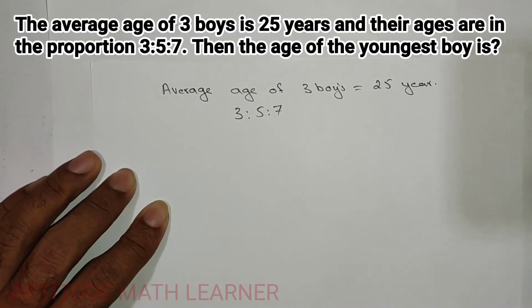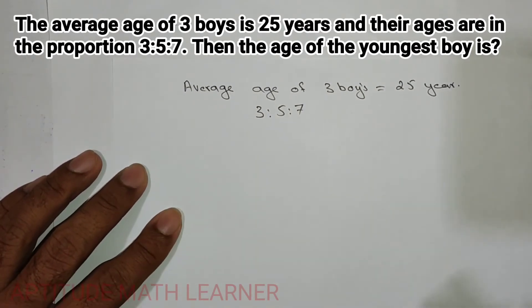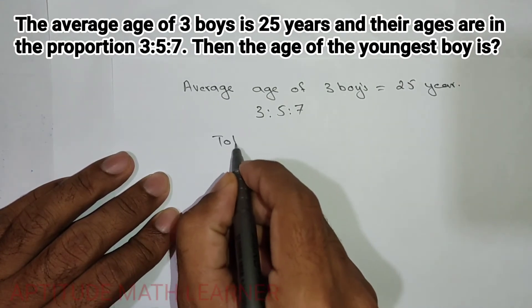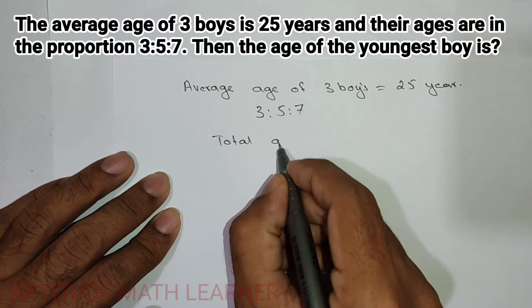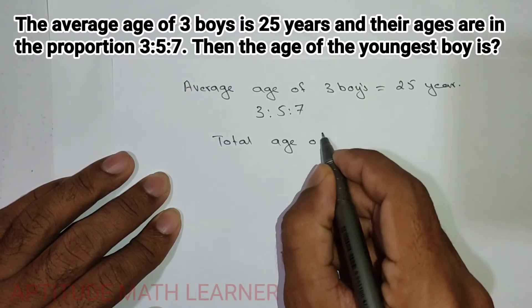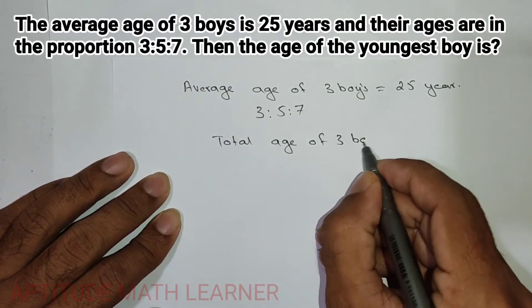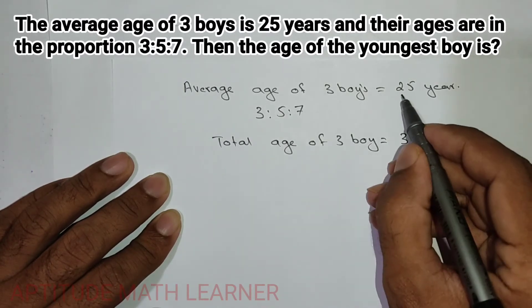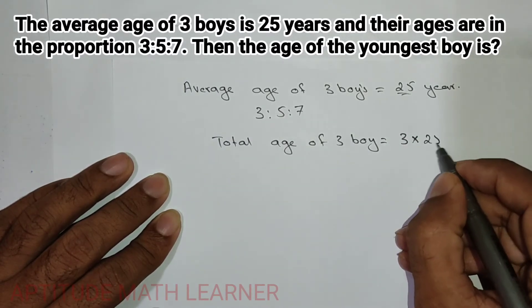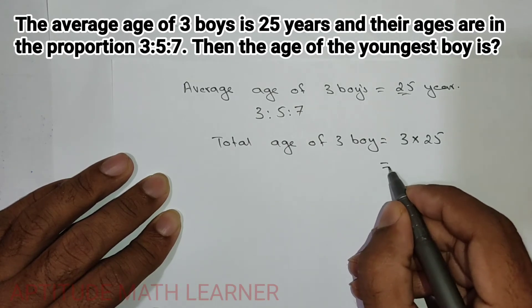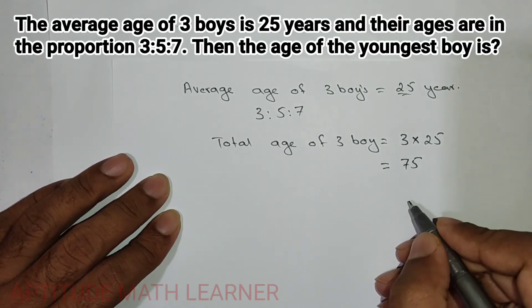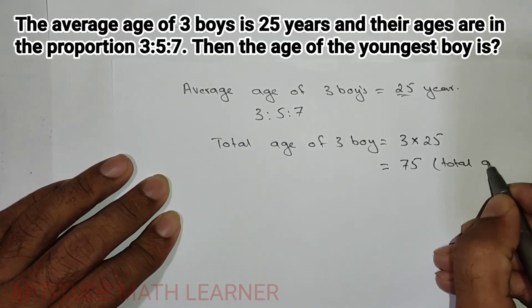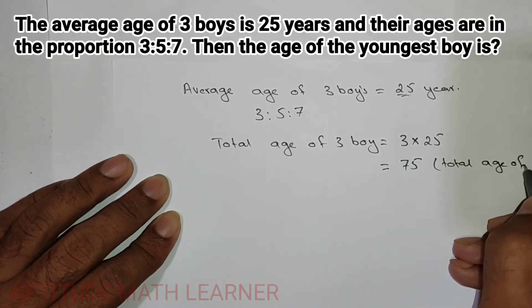First, we find the total age. The total age of three boys is 3 multiplied by 25, and we get 75. So 75 is the total age of the three boys.